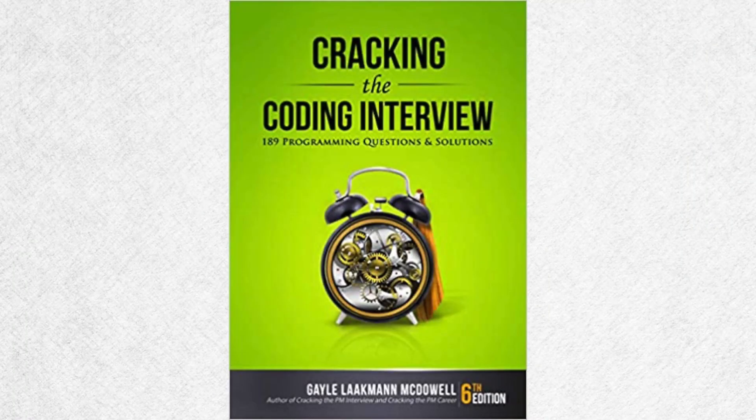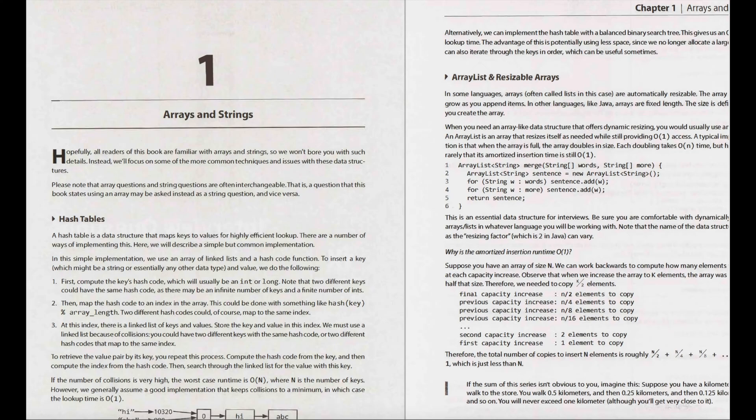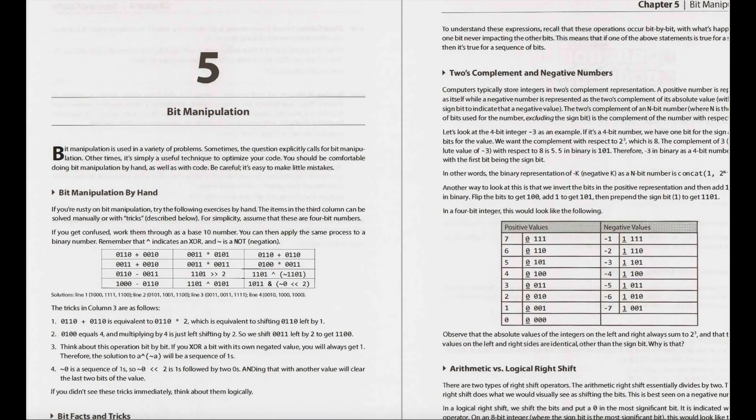Once I was done studying the basics I moved on to solving problems. For this I used Cracking the Coding Interview — I went chapter by chapter, reading through each data structure or algorithm, solving the first few questions for about five to ten minutes on paper, then looked at the back of the book to check the solution, re-implemented it in my own words on paper, and added it to my Python compiler to check for syntax errors.